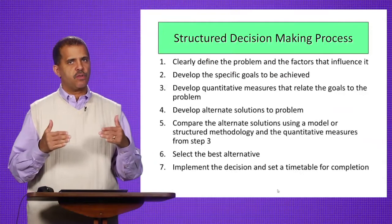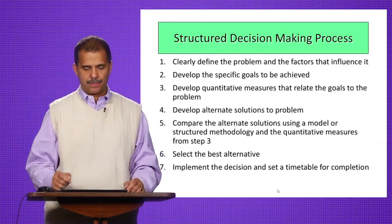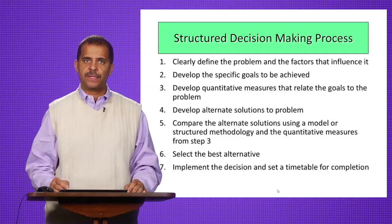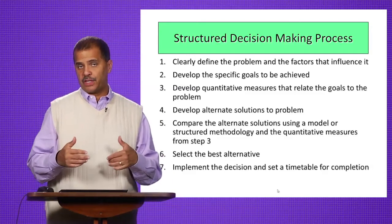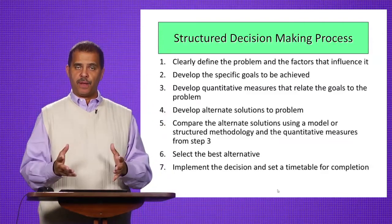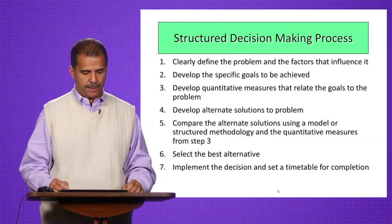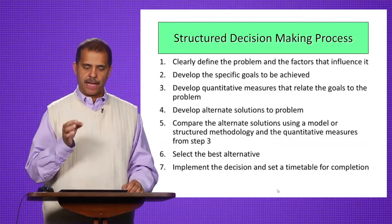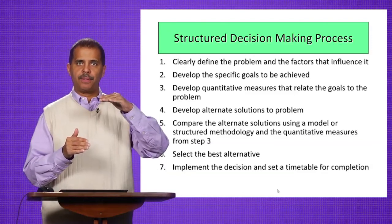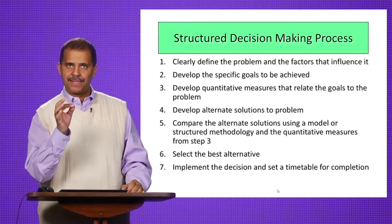Let's walk through a structured decision-making process that applies to both systems design and systems operation. First, clearly define the problem and the factors that influence it. You don't define it just once — you define it again and again and get input from others. You don't want to jump to a premature conclusion if you haven't defined the problem properly. Second, develop specific goals to close the gap, either eliminating the problem or getting close to eliminating it.